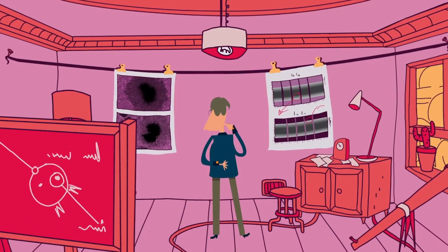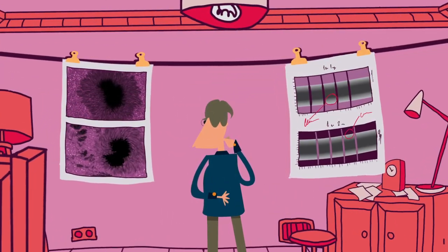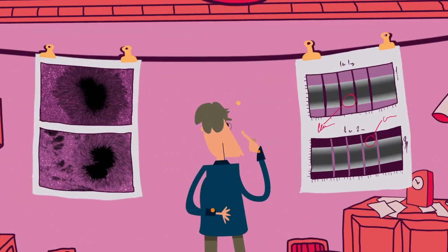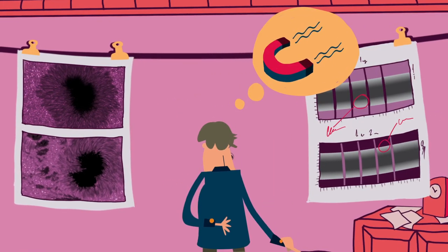Hale observed double spectral lines in sunspots, like the ones produced in the laboratory by strong magnetic fields. He discovered in 1908 that sunspots have intense magnetic fields.